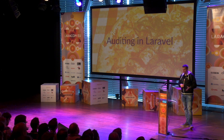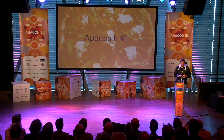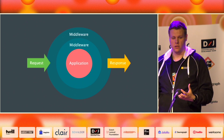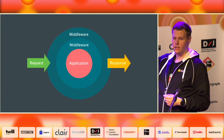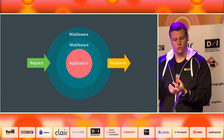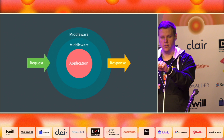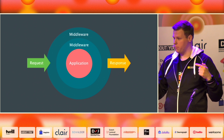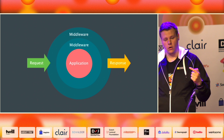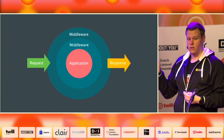We have a basic idea of what auditing can be and how we can use it. Let's see how Laravel does it. We're going to do two approaches today: a really simple, basic one, and a really advanced approach. First, I want to explain what a middleware is, because we need it in both examples. A middleware works like an onion — you go from left to right, through the first, second, and third middleware, then into your application, and back out through the middleware again in the same direction.